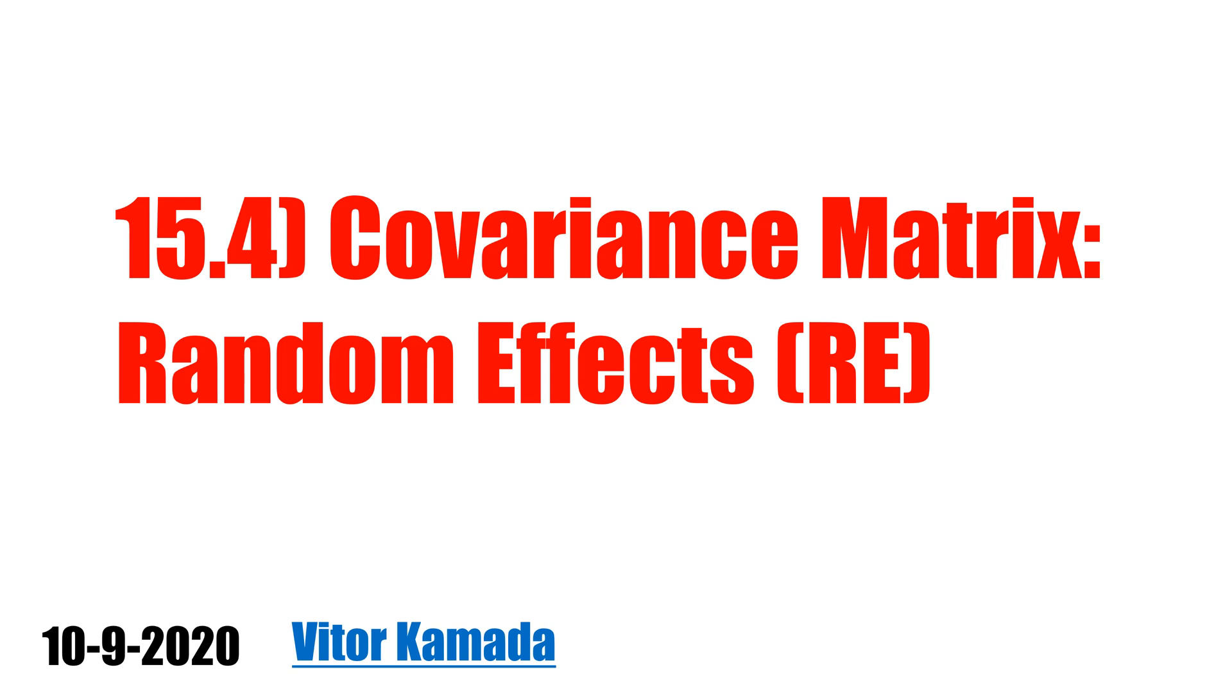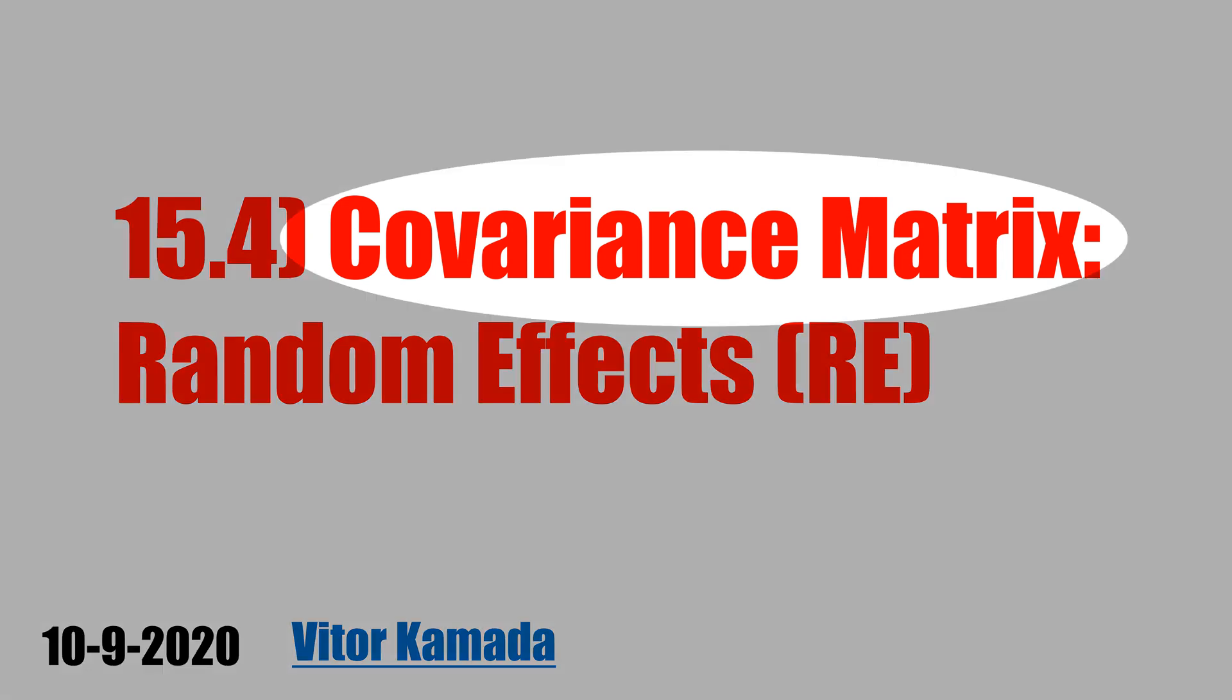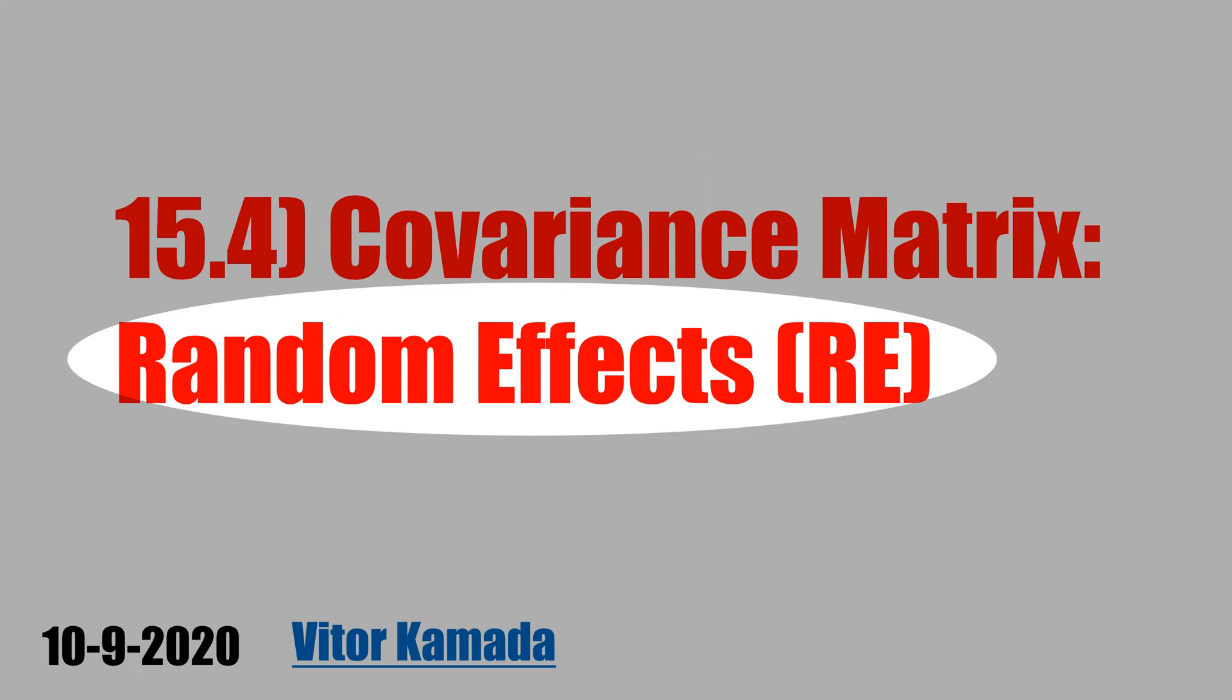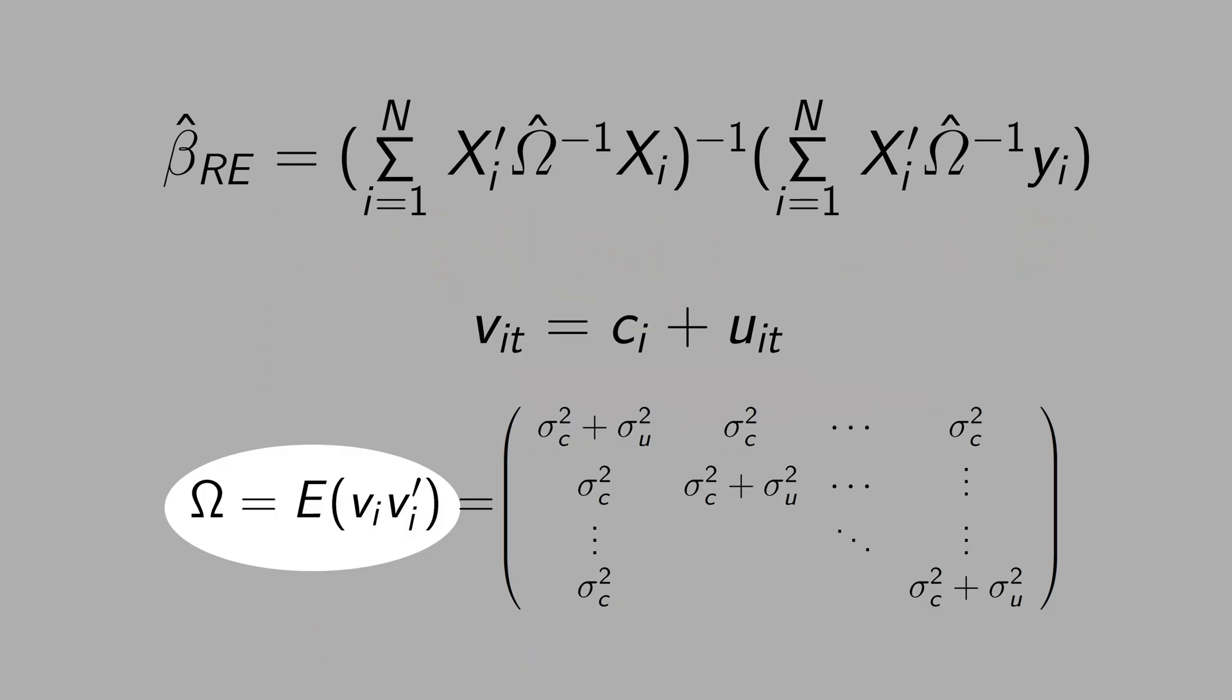The goal of this video is to understand the covariance matrix of the random effect estimator. In the previous video, we saw how this covariance matrix of the random effect is important to get beta hat random effect, because the omega here shows up inside the formula, here and here. Let's understand a little bit more how to get this covariance matrix here.